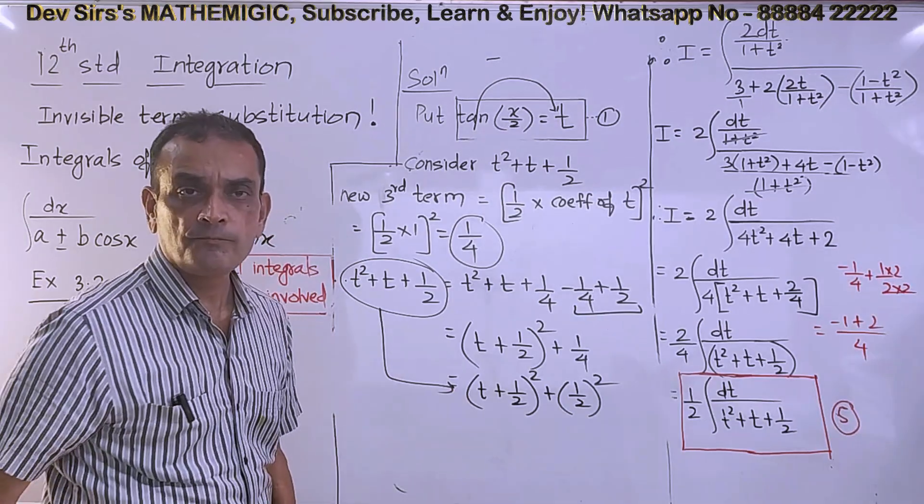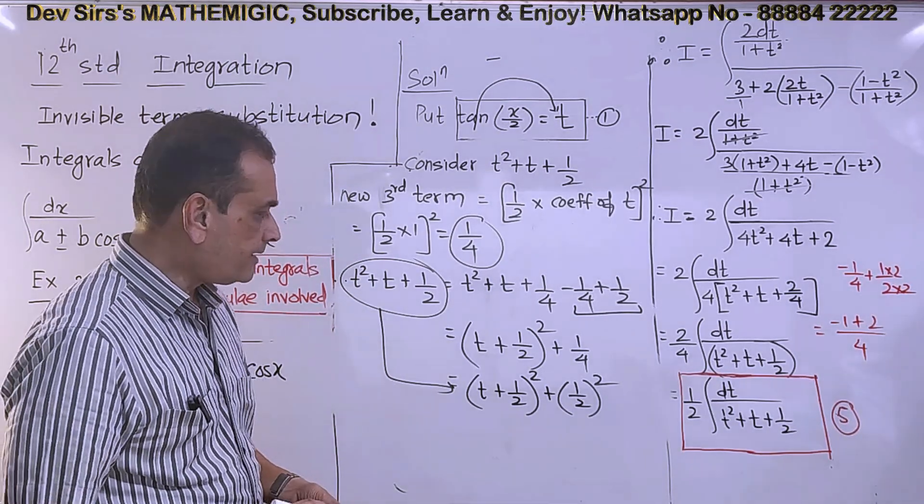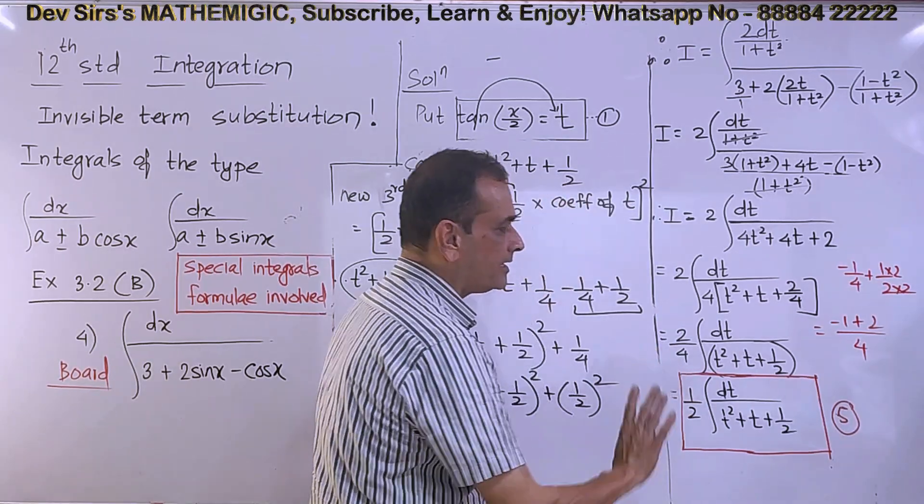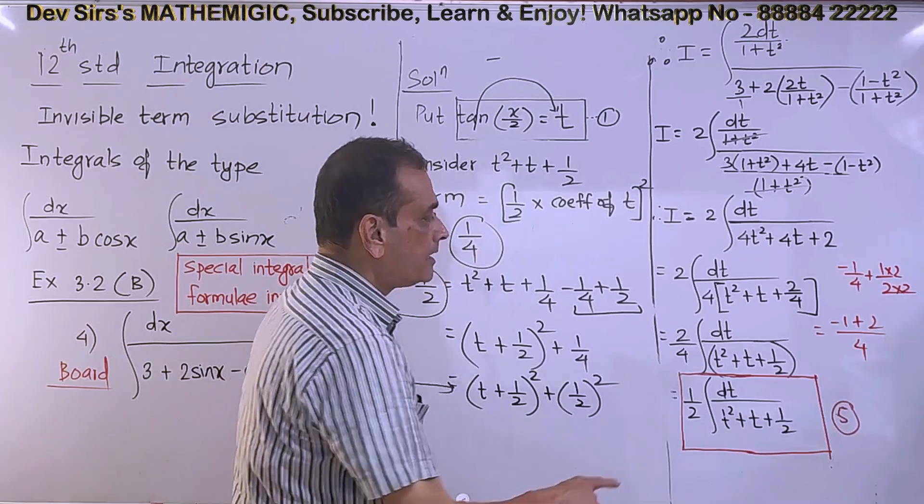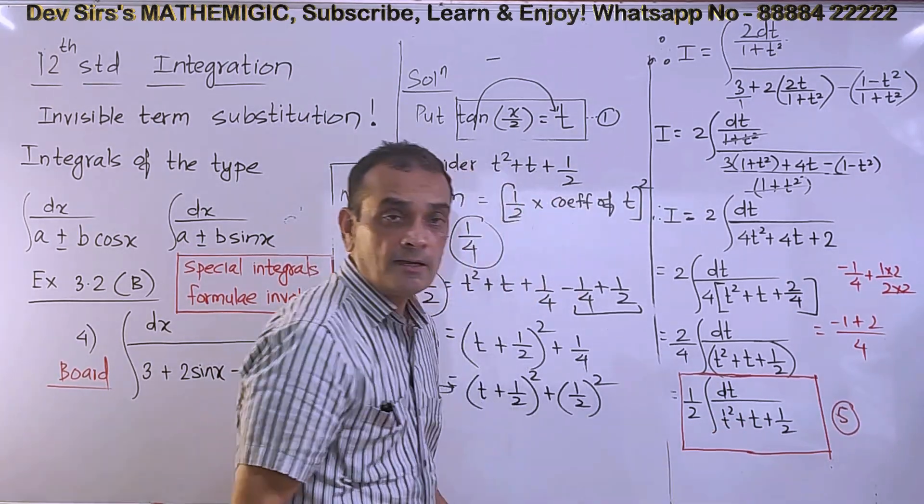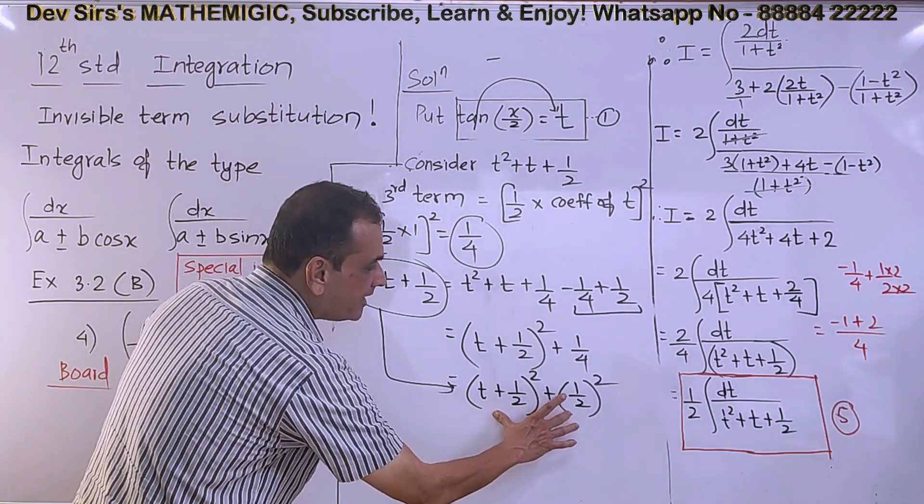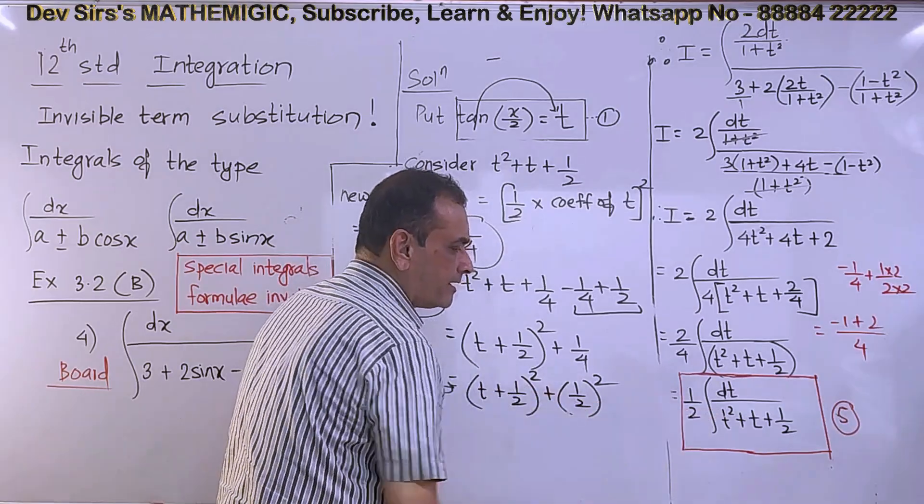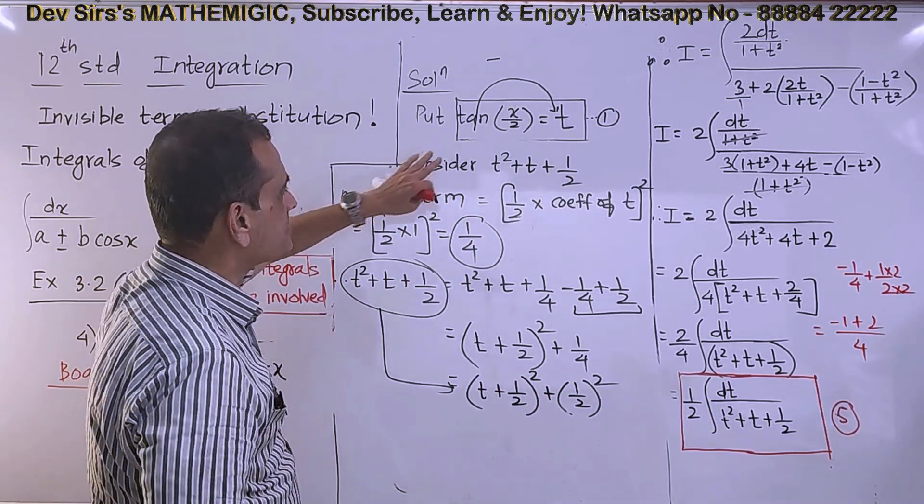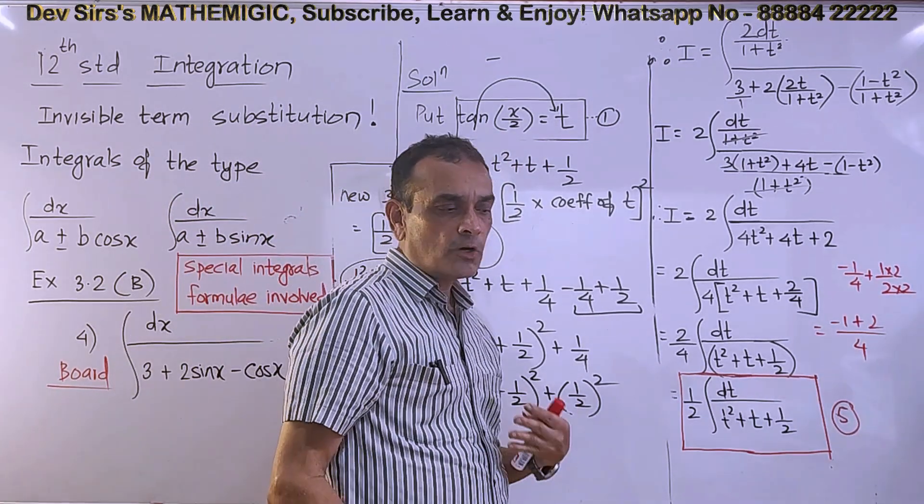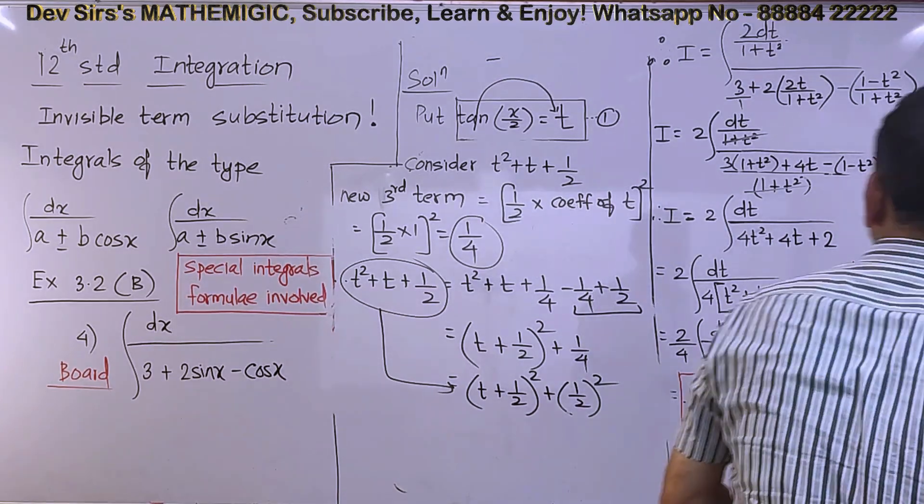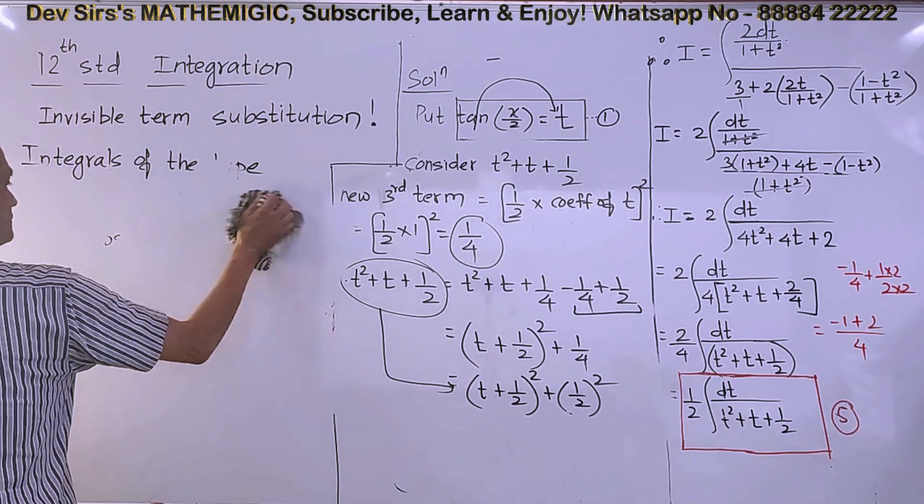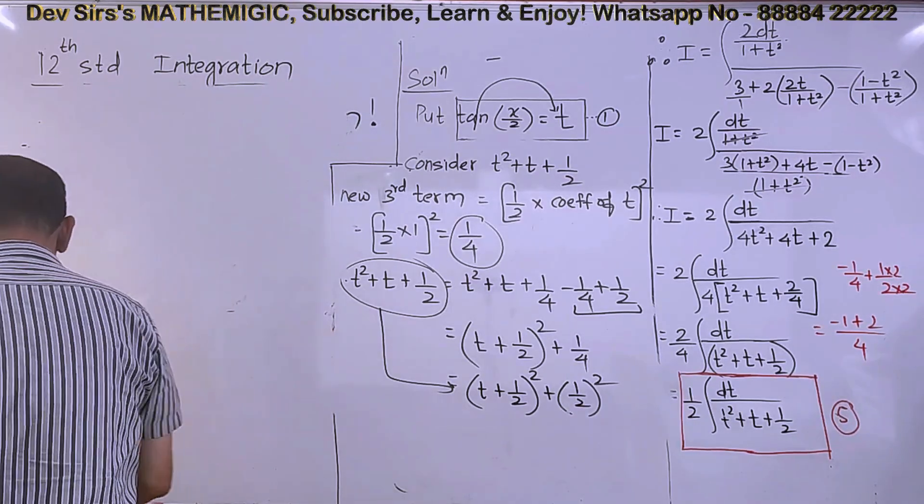This is what we get after completing the square method. We got this from the previous step. Now we are going to substitute this value in equation 5, the main integral, where the constant is outside. We had t² + t + 1/2, but for t² + t + 1/2 we now have this completed square form. Just substitute in the main integral. The invisible term tan(x/2) is important - we need to make it visible in the last step.